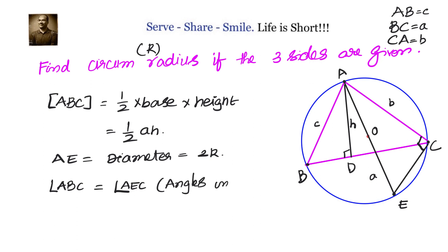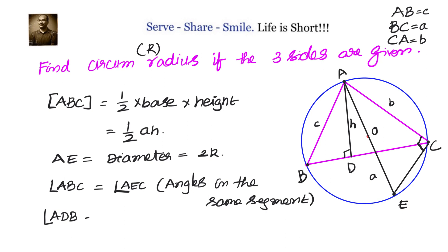We also know that angle ADB = 90° because AD is an altitude, and angle ACE = 90° because the angle in a semicircle is a right angle. We can clearly see these two triangles are similar to each other by the AA similarity criterion.